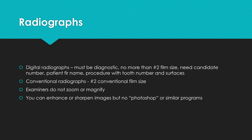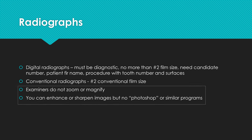For radiographs, you can use digital or conventional. All radiographs must be diagnostic. Use number two conventional film size or the digital equivalent. All x-rays need your candidate number, your patient's first name, and the procedure with tooth number and surfaces. Examiners are not allowed to zoom or magnify images. You may enhance or sharpen images but cannot use Photoshop or similar programs to alter them.